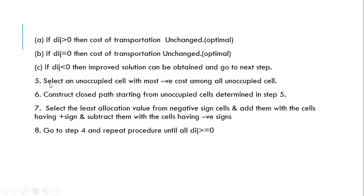So what is the next step? We have to select an unoccupied cell with most negative cost. Suppose if we get more than one negative value, in that case we have to choose the most negative value.